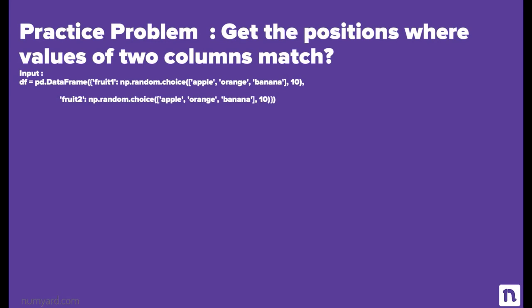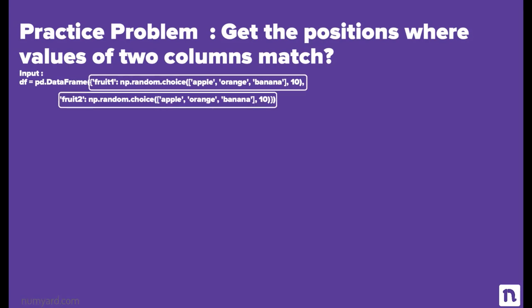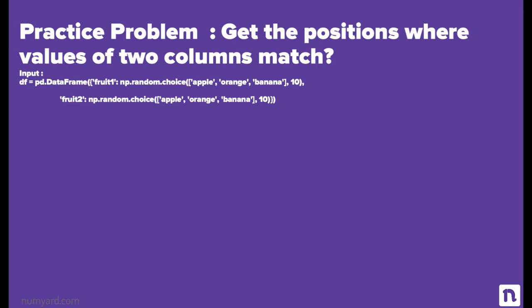Now it's time for a practice exercise. The question is: get the positions where the value of two columns match. The input for this practice problem would be a data frame df. I am creating the data frame df using the pandas dot DataFrame function with two columns, fruit_one and fruit_two. Both columns have ten values randomly chosen from apple, orange, and banana. You need to find the position where the value in both columns match. Give it a shot.